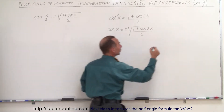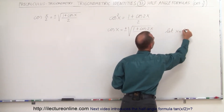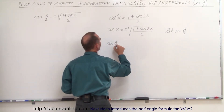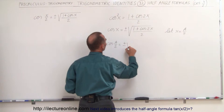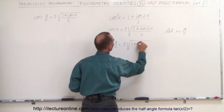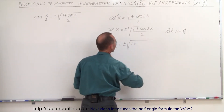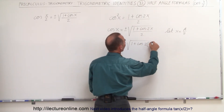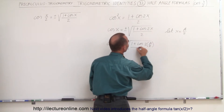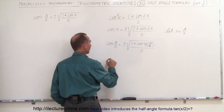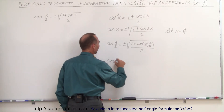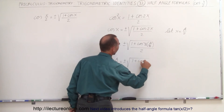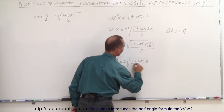And now we substitute. We're going to let x equal a over 2. When we do that, we get the cosine of a over 2 is equal to plus or minus the square root of 1 plus the cosine of 2 times a over 2, all divided by 2. And of course, then the 2's cancel out. And so we end up with the cosine of a half angle is equal to plus or minus the square root of 1 plus the cosine of the full angle divided by 2.